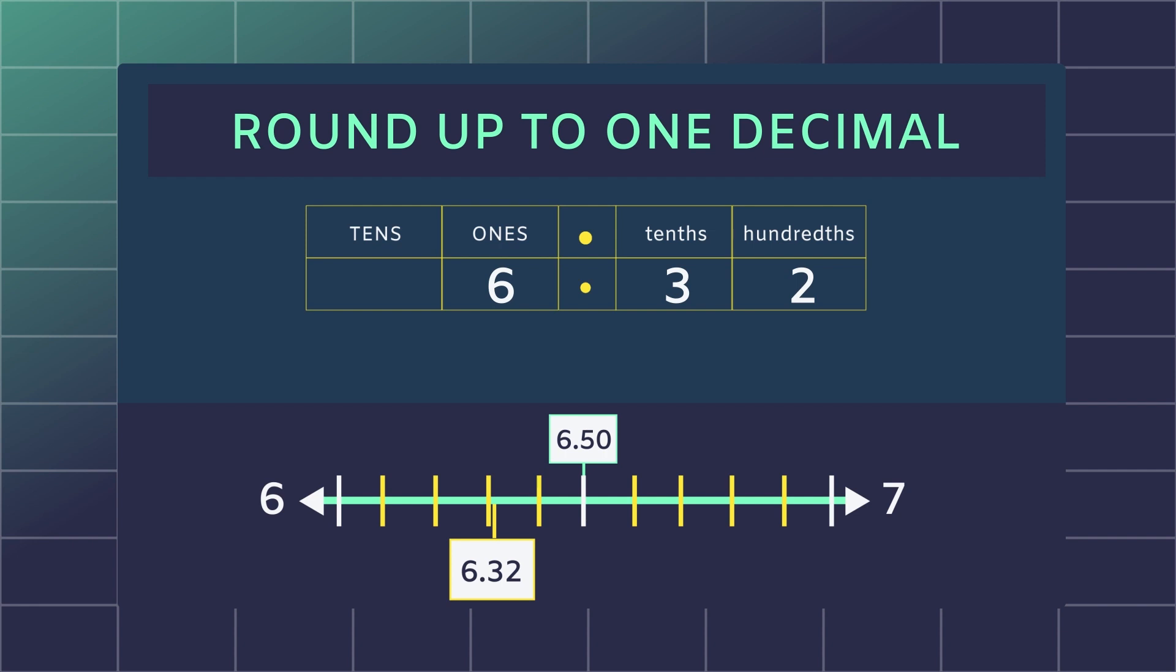Applying the method that we have learned, you see that 2 is less than 5. Therefore, it will round down to the lower number, 6.3.